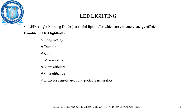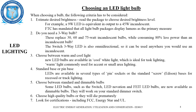To choose an LED lamp, first estimate the desired brightness by reading the package. For example, a 9-watt LED is equivalent in output to a 45-watt incandescent. The FTC mandates that all light bulb packages display lumens as the primary measure. Three-way LED bulbs replace 30, 60, and 75-watt incandescent bulbs while consuming 80% less power, and are omnidirectional so they can be used anywhere you would use an incandescent lamp.